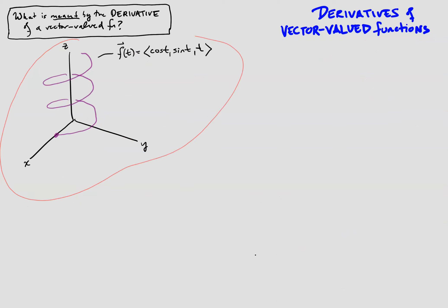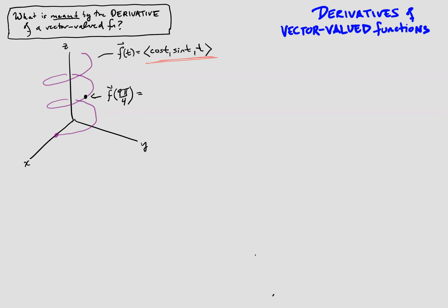Going back to the helix: starting at t = 0, doing a full revolution and then another 45 degrees (π/4) means that point is f(9π/4), with coordinates (1/√2, 1/√2, 9π/4). We could ask: how would we interpret f'(9π/4)? It's going to be a vector tangent to the curve at the point in question, lying along the tangent line — and shortly after that we'll ask how to actually compute it.